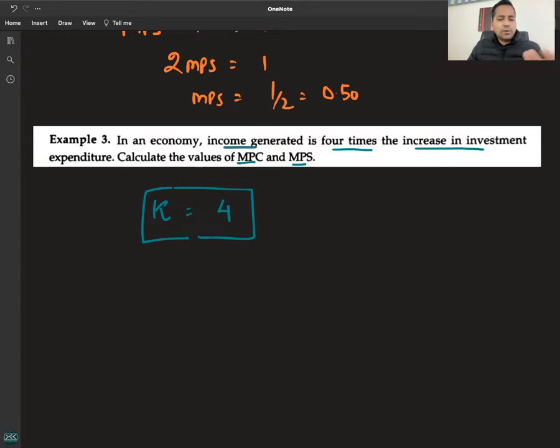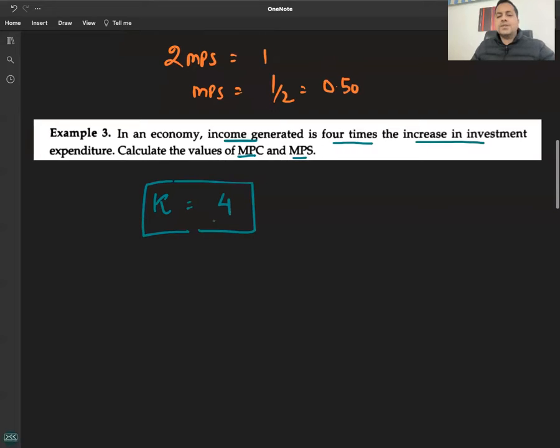It's easy to calculate MPC and MPS. The first line was trying to confuse you. So K is equal to 1 upon 1 minus MPC.